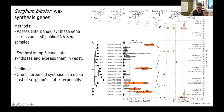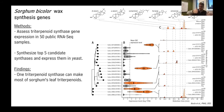Two other sorghum genes we tested didn't seem to do anything in yeast. But this last one produced simiarenol as well as fernenol and isoarborinol — the major triterpenoids present on the surface of the plant. Simiarenol is the compound protecting the majority of the sorghum leaf surface area over the whole course of sorghum's lifespan. So this gene — the simiarenol synthase — became quite important to us.